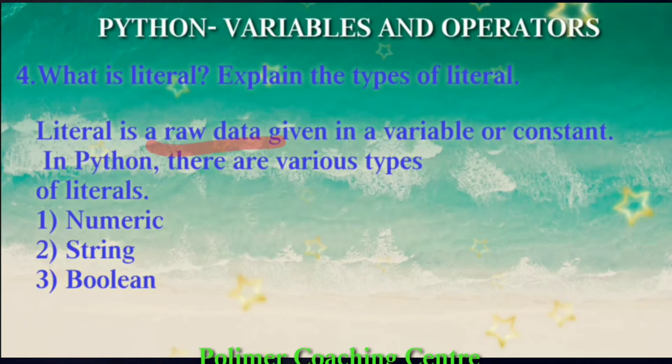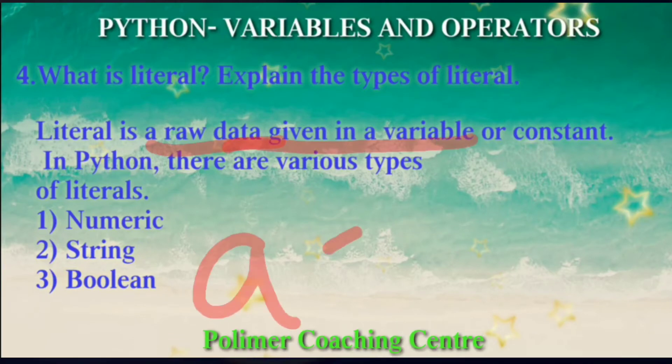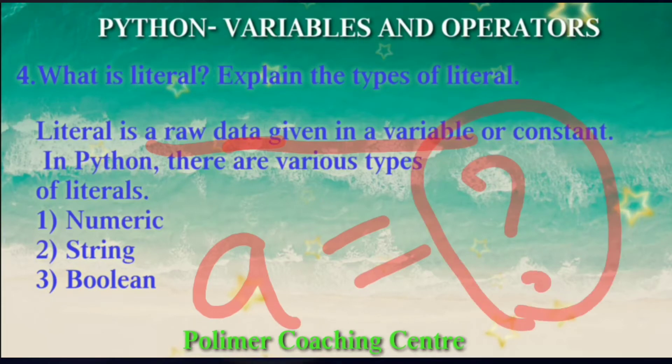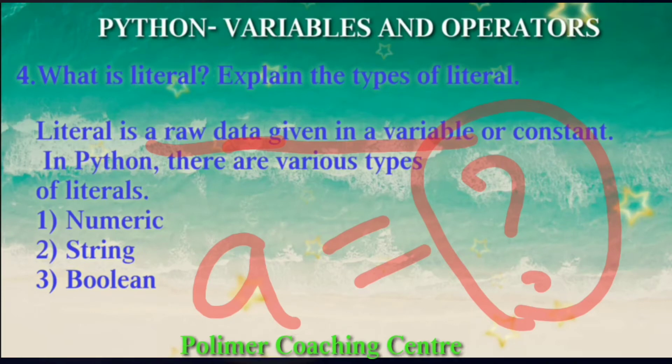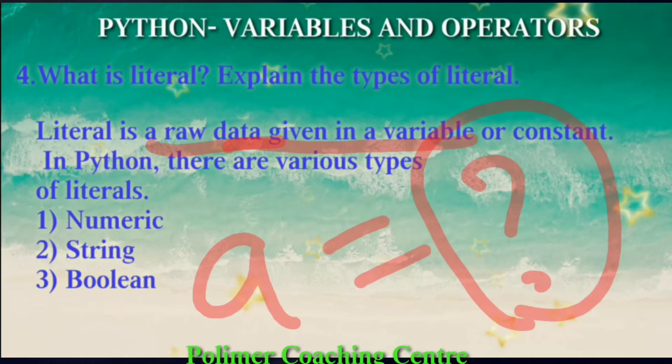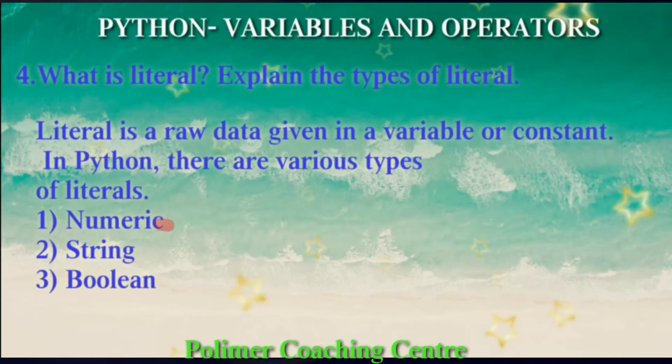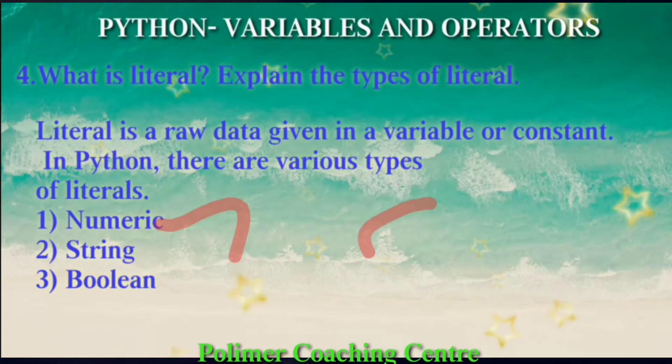In this, raw data given in a variable. For example, a is equal to a value. In this, that value is literal. It is not constant. In this variable, we can use literal. In this literal, it is numeric. In this type, it is integer.